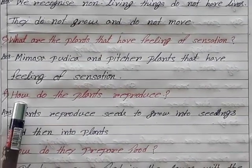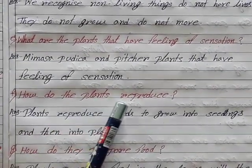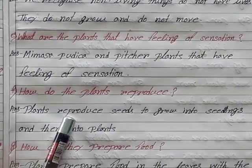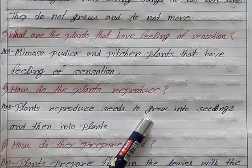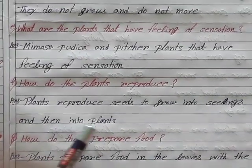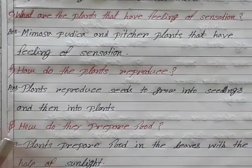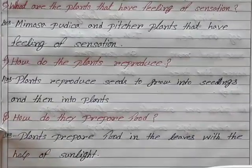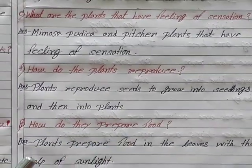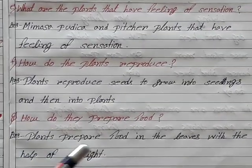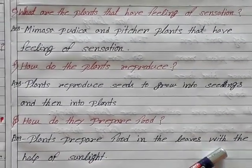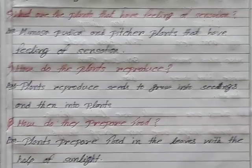Question F: How do plants reproduce? Plants reproduce through seeds that grow into seedlings and then into plants. Question: How do they prepare food? Plants prepare food in the leaves with the help of sunlight.